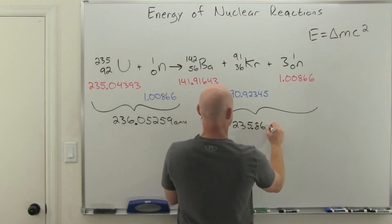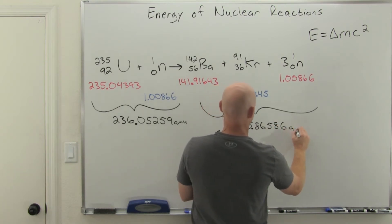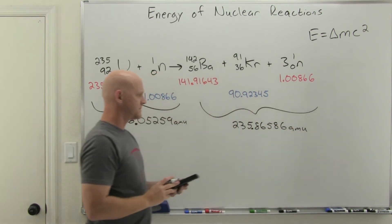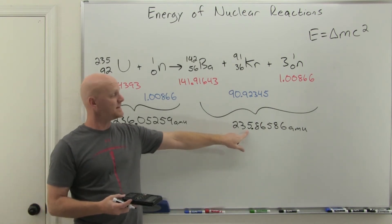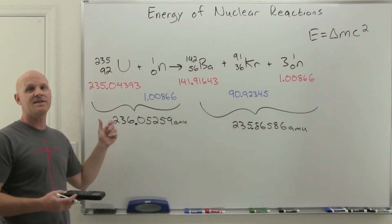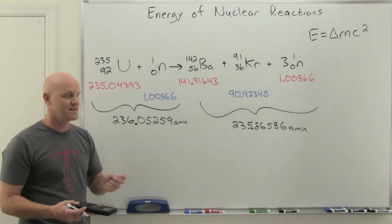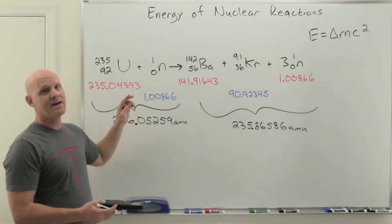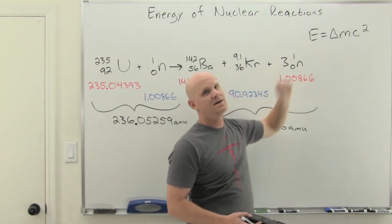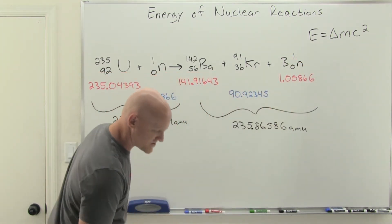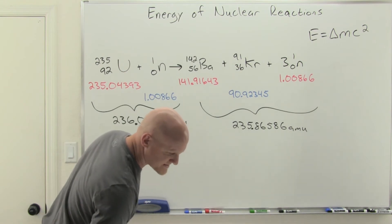Now if we take the difference between these two numbers, notice our products do weigh just a little tiny bit less than our reactants. That difference in mass is the mass defect. This looks small, but a little bit of mass turns into a whole lot of energy using Einstein's equation. Your mass defect is going to come out to 0.18673 AMUs.